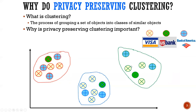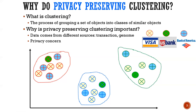Why do we consider clustering in a privacy-preserving manner? Machine learning problems, including clustering, are data hungry, but the data might come from different sources and be very sensitive. For example, Visa, US Bank, and Bank of America all have transactions and want to cluster on their databases to analyze information like fraud detection. However, they cannot share their databases with each other — in other words, we want to run clustering while keeping their data private.